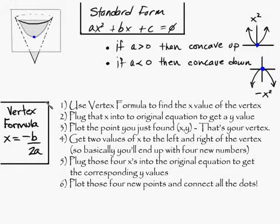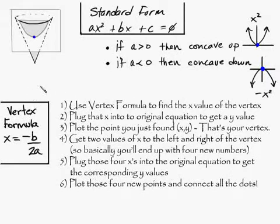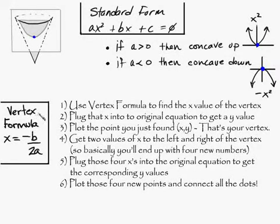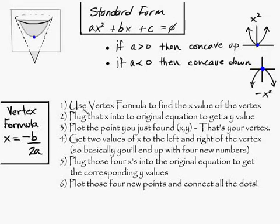In order to make a parabola, you need to know what the vertex formula is and then follow these steps. In the vertex formula, you may recognize x equals negative b over 2a from the quadratic formula. The quadratic formula is x equals negative b plus or minus the square root of b squared minus 4ac, all over 2a. It's just the negative b over 2a part — everything else you can exclude.